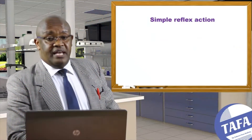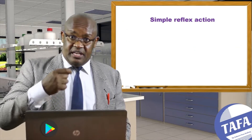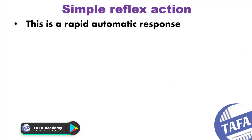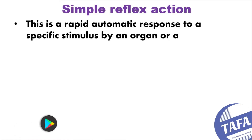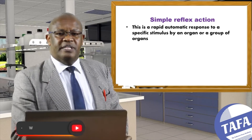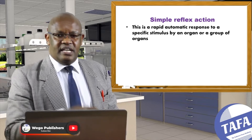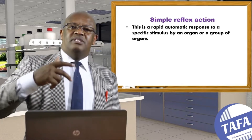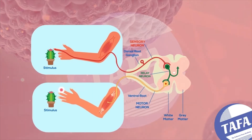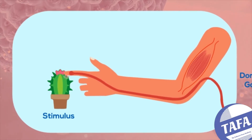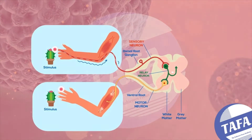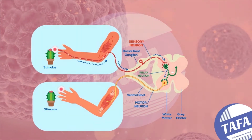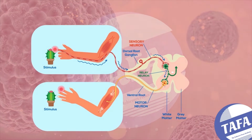Reflex action is a rapid and automatic response to a certain stimulus in the environment. This response is carried out by one organ or a group of organs in the body. The purpose of reflex action is to protect the body from imminent danger in the environment or mechanical damage.